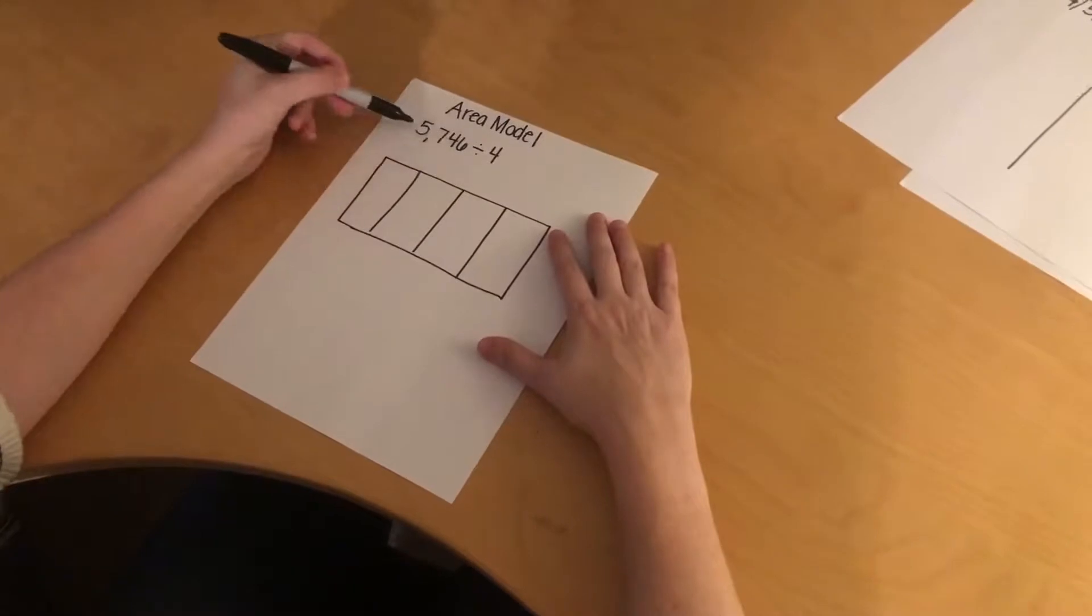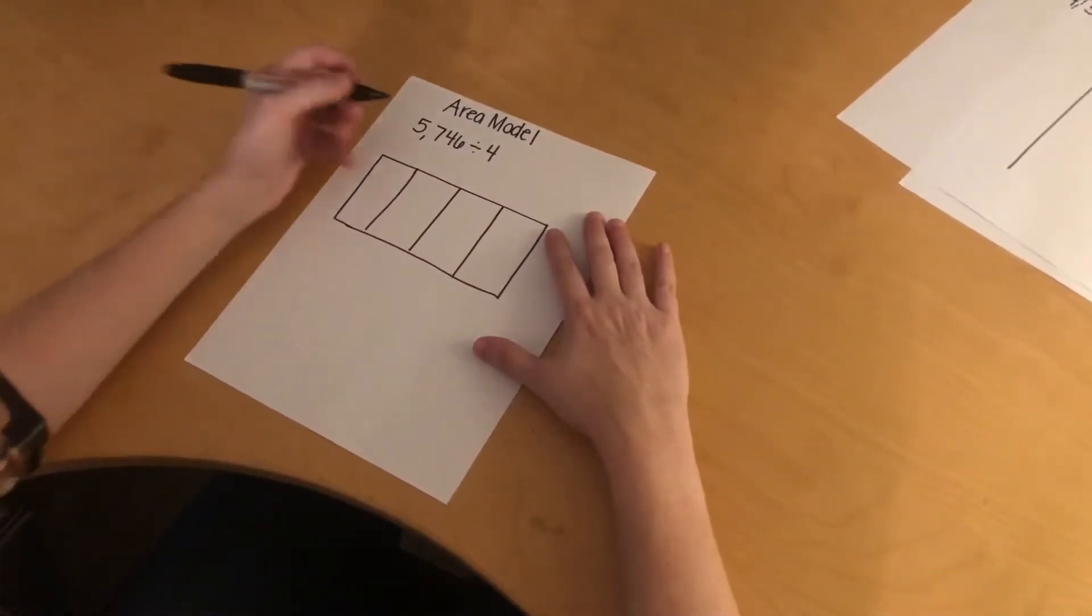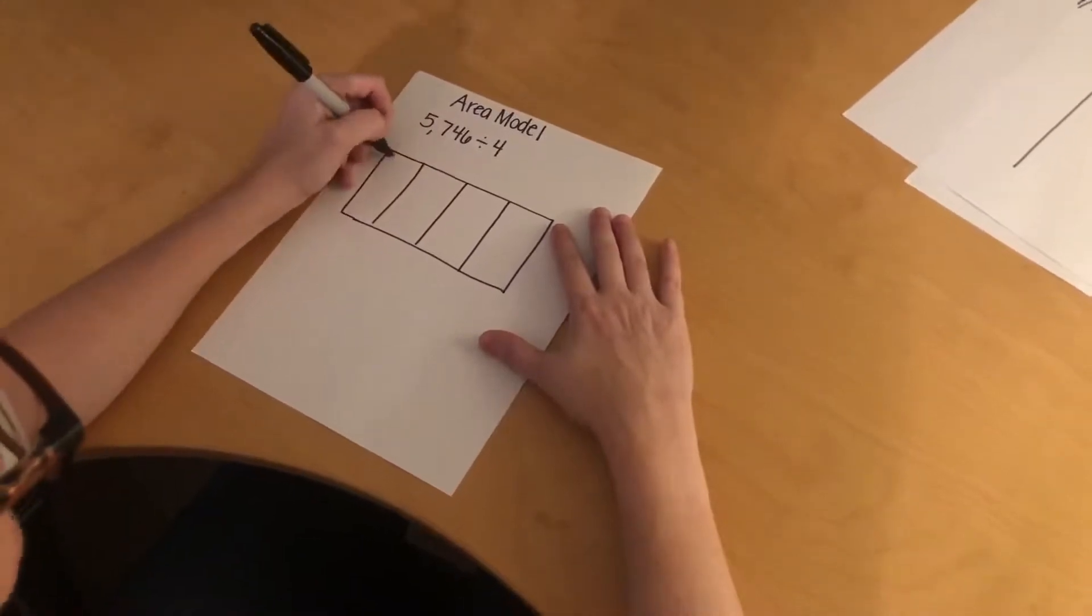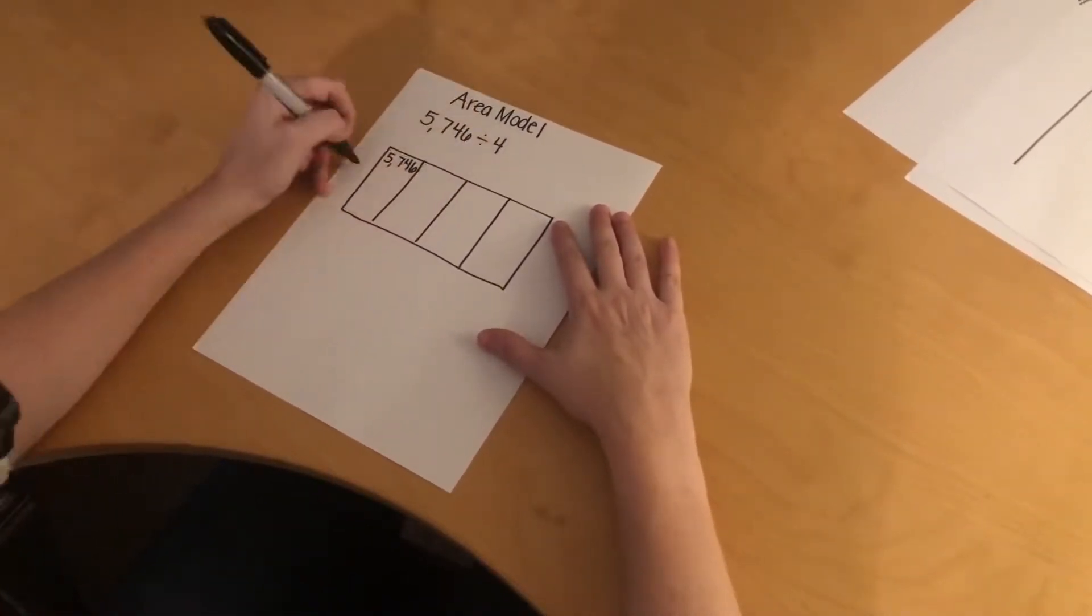Since this is a 4-digit number, I'm going to need a 4-column box. And what I do is I write the dividend, the large number, in the first box. And then you write your divisor on the side.